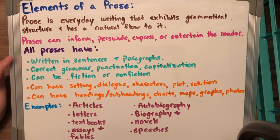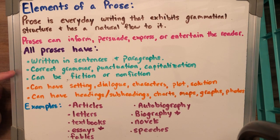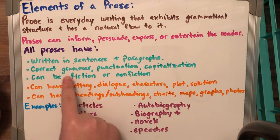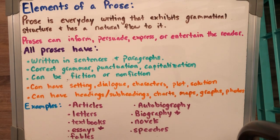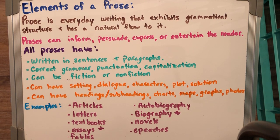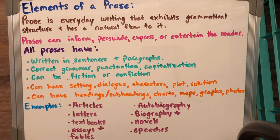All prose typically have these things in them: they're written in sentences, which are usually written in paragraphs. There's correct grammar, capitalization, and punctuation. When you read them, they have a natural flow — they don't sound choppy like a robot. You don't have one gigantic run-on sentence. You have the correct punctuation to separate each sentence, and every sentence starts with a capital letter with the correct punctuation.